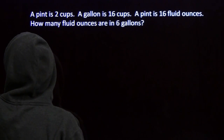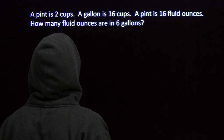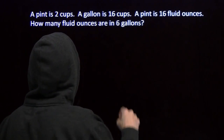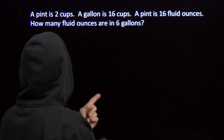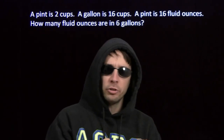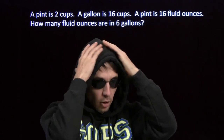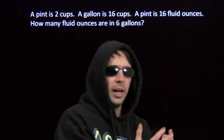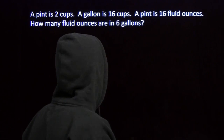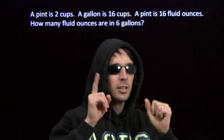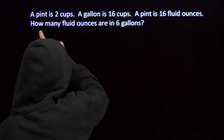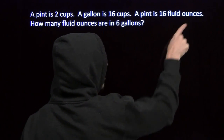Let's try one more. Here we have to convert gallons to fluid ounces. We only know how to go from gallons to cups, then from cups to pints, then from pints to fluid ounces. Now if you don't use conversion factors, you have to figure out each step — do I divide here, do I multiply here? Conversion factors make it automatic, so I'm going to write down conversion factors for each of these facts.